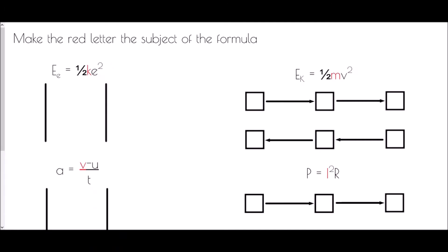The next set of formulas will take a couple of steps to rearrange. In each case we're going to make the red letter the subject. For Ek = ½ke², we want to make k the subject. We need to look at what has happened to k: it has been multiplied by a half and multiplied by e². We could do this in one jump, but I'm going to show you it in a couple of steps.